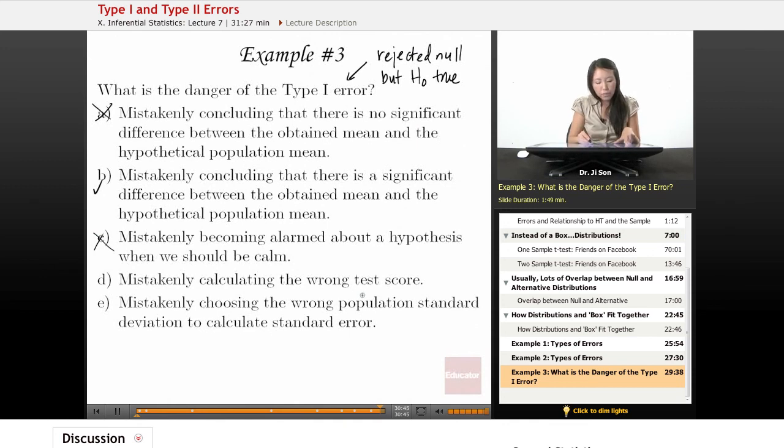Mistakenly calculating the wrong test score. Remember, these errors are not errors that you can actually avoid. These are not errors because we were sloppy. These are errors that are made because we don't know the real nature of the world. So this is actually not what we're talking about when we're talking about type 1 or 2 errors.